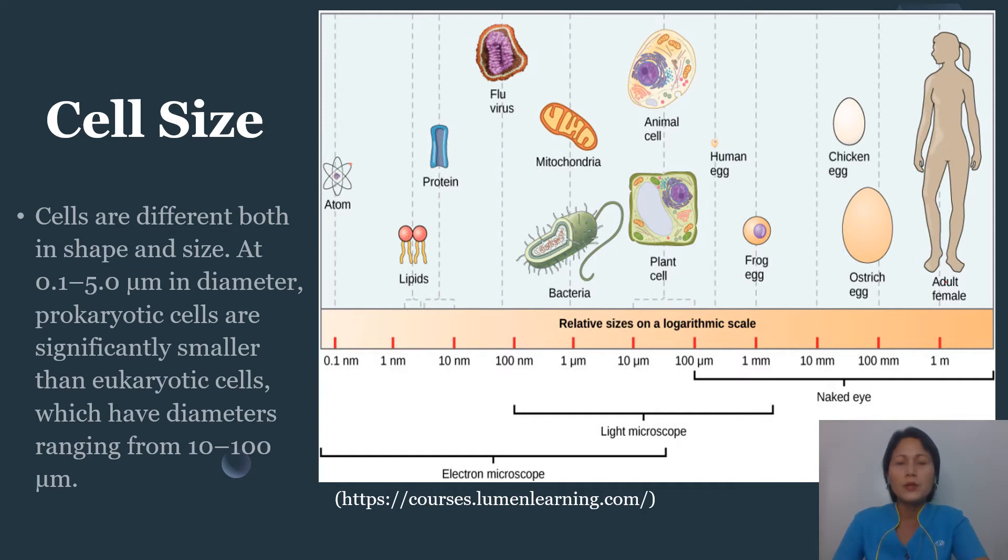However, larger eukaryotic cells have evolved different structural adaptations to enhance cellular transport. Indeed, the large size of these cells would not be possible without these adaptations. In general, cell size is limited because volume increases much more quickly than the cell surface area. As the cell becomes larger, it becomes more and more difficult for the cell to acquire sufficient materials to support the processes inside the cell because the relative size of the surface area across which materials must be transported declines.